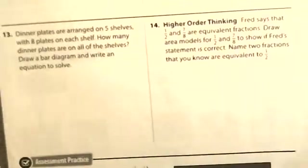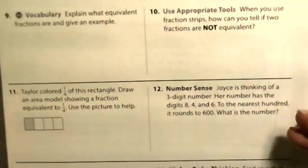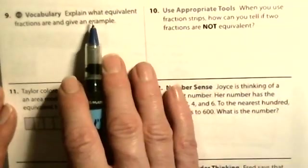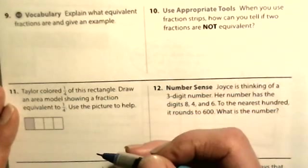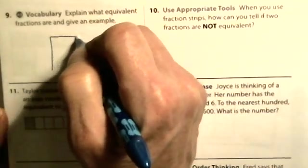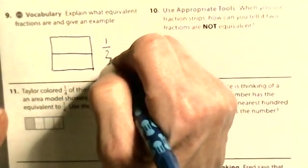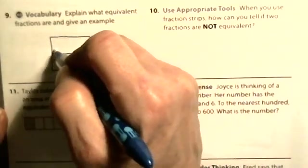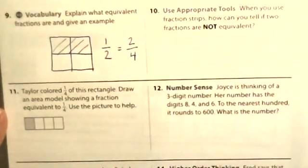Let's look at the next page. We're not going to do all of these, but I think there might be some questions like this on the practice buddy, so I want to make sure I go over how to do them. It says explain what equivalent fractions are and give an example. Equivalent fractions are fractions that name the same part of a whole. For example: one-half equals two-fourths.